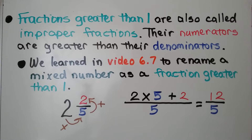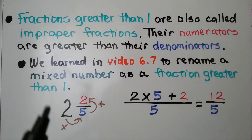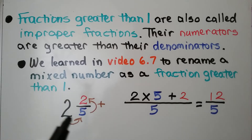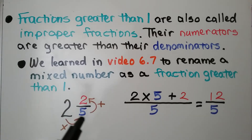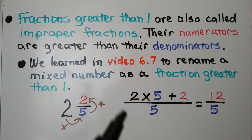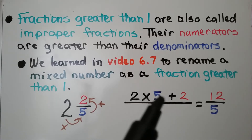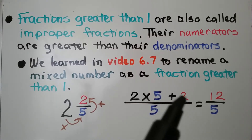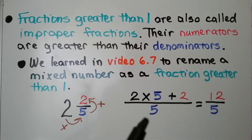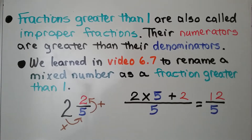We learned in video 6.7 to rename a mixed number as a fraction greater than 1. We can look at a mixed number like 2 and 2 fifths as a fraction greater than 1. We multiply the whole number 2 by the denominator, then add the numerator: 2 times 5 is 10, plus 2 is 12. So it's equal to 12 fifths.